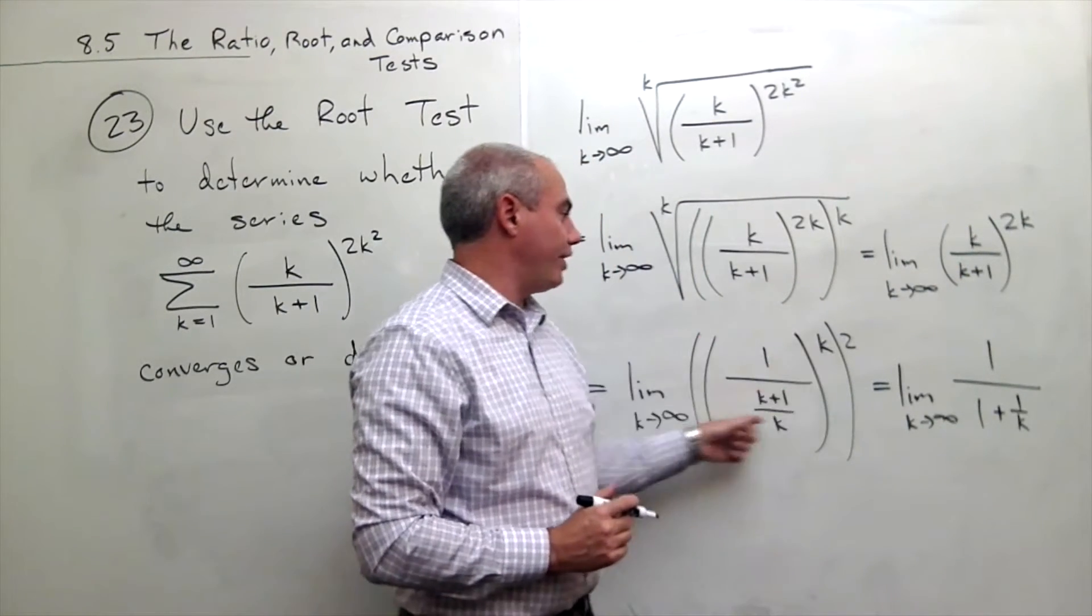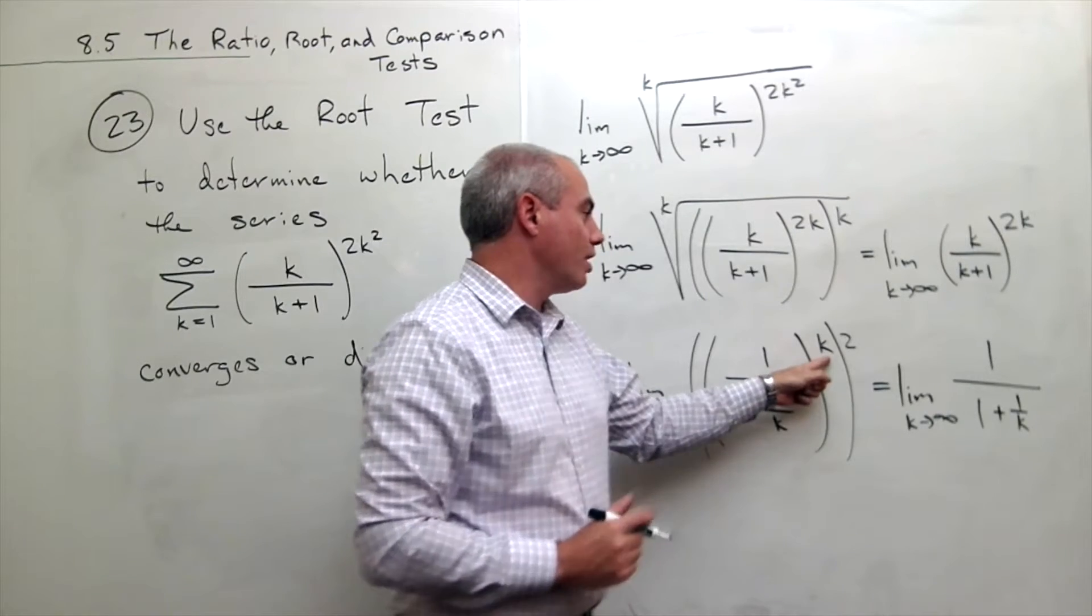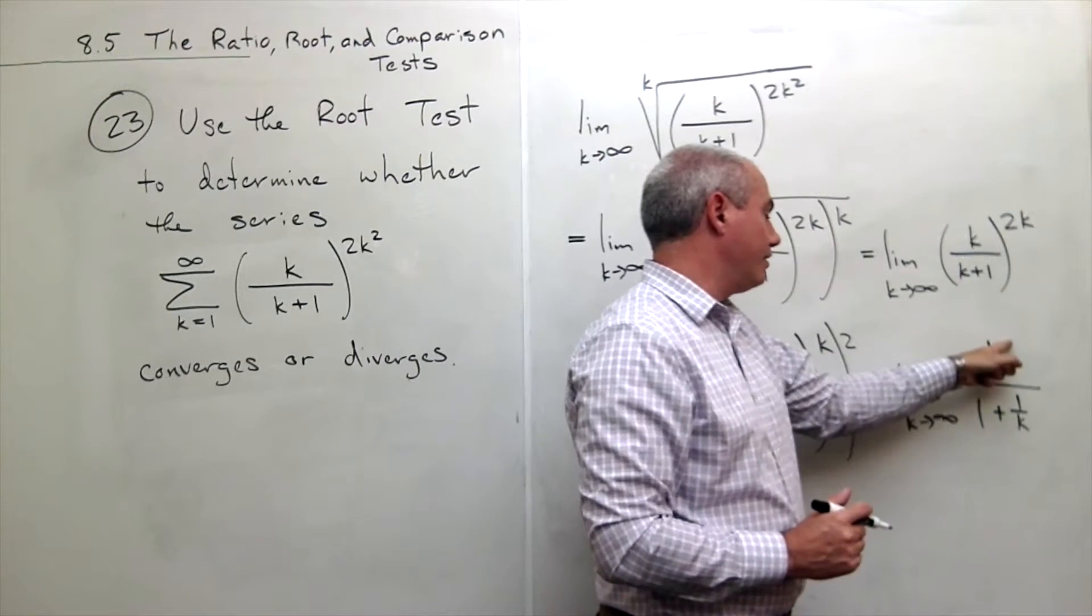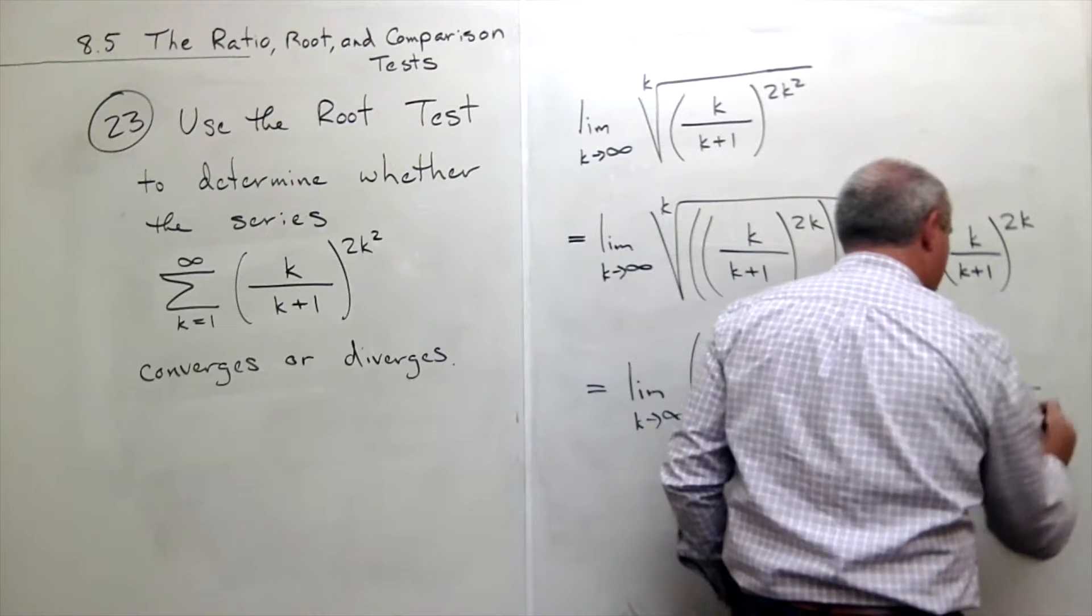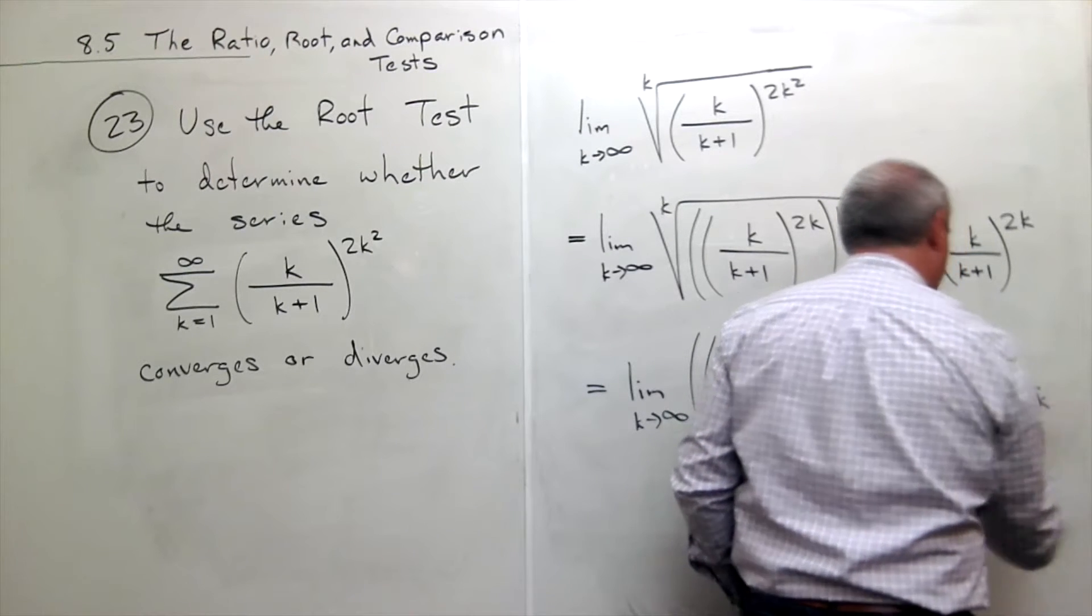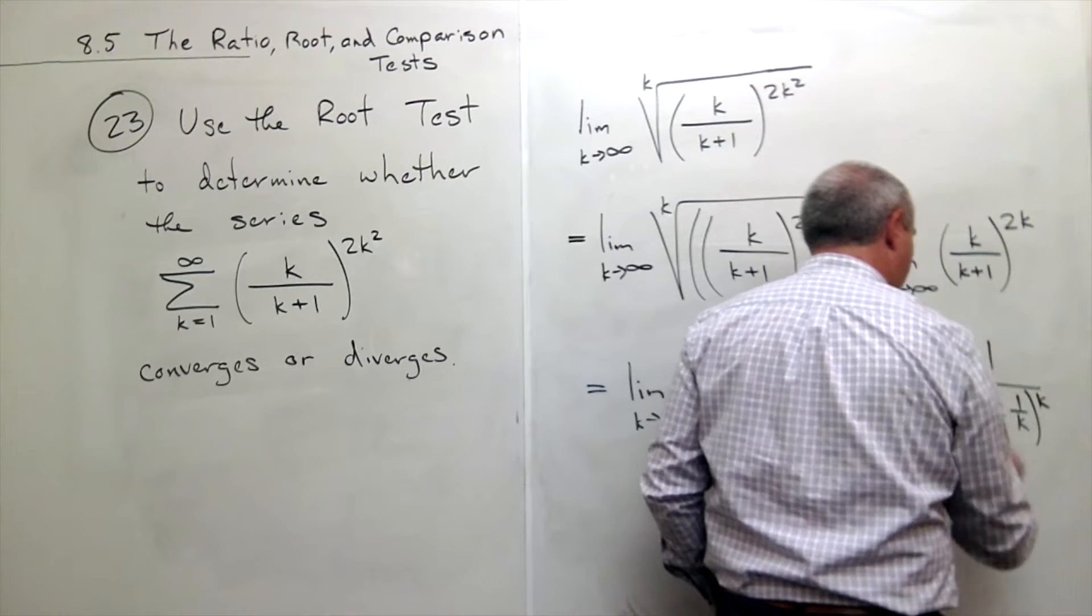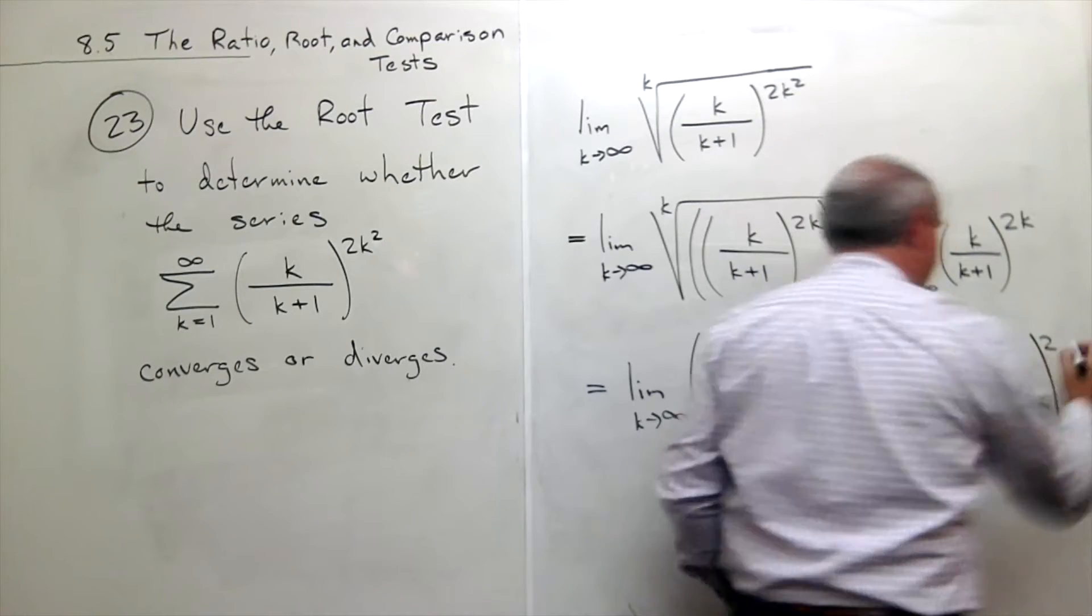And then that whole thing is raised to the k power. Well, 1 to the k is just 1, and so it's just this guy raised to the k, and that whole quantity is still squared.